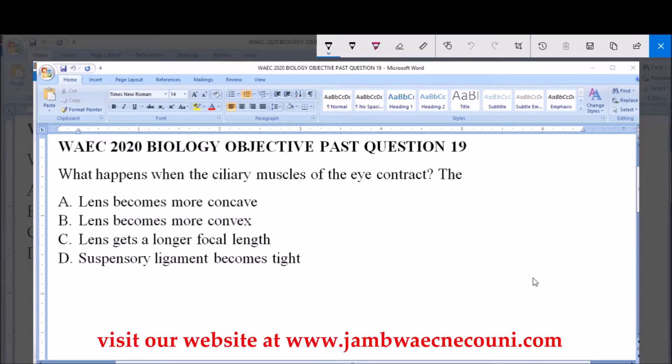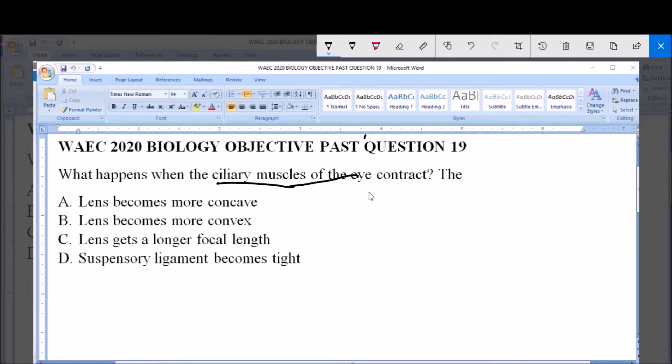While looking at the function, or basically what this question is asking is the function of the ciliary muscles of the eye. Now, the ciliary muscles of the eye is a ring of small muscles in the eye's middle ear.